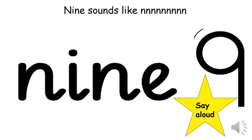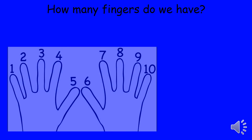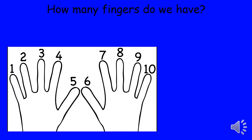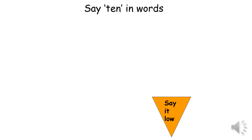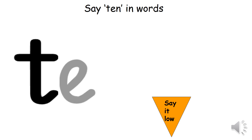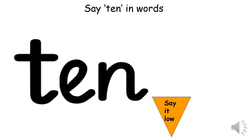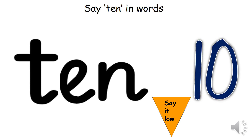Now what's the next number that comes after number nine? I can see my hands. How many fingers do I have? One, two, three, four, five, six, seven, eight, nine, ten. Yes, so it's number ten that comes after number nine. Now say ten in words a little low: T-E-N, T-E-N, T-E-N. That's how we practiced different voice modulation in different pitch — low, medium, high.